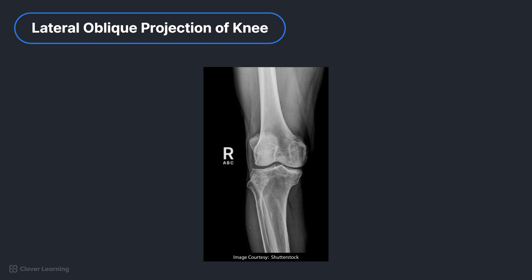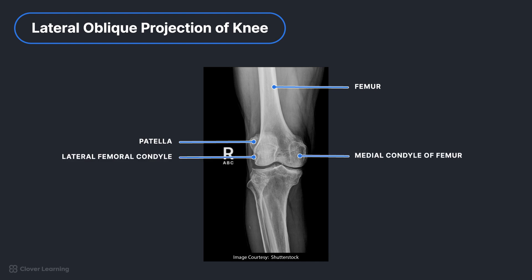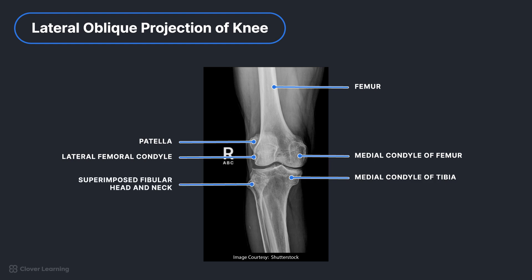Let's identify the anatomy in this image. From superior to inferior, we see the distal femur, patella, lateral femoral condyle, medial femoral condyle, medial condyle of the tibia, superimposed fibular head and neck, and proximal tibia.